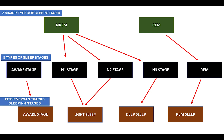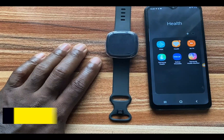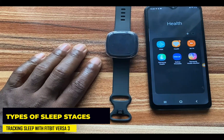N1 and N2 are referred to as light sleep, while N3 is referred to as deep sleep. The Fitbit Versa 3 tracks your sleep in four stages: the awake stage, the light sleep stage (comprising N1 and N2), the deep sleep stage representing N3, and REM. So let's talk about the five different stages.